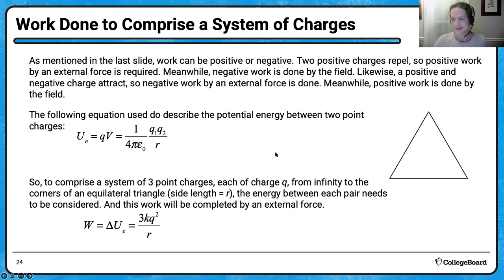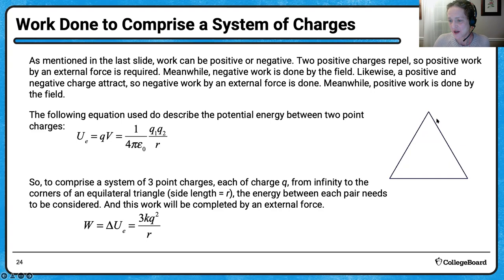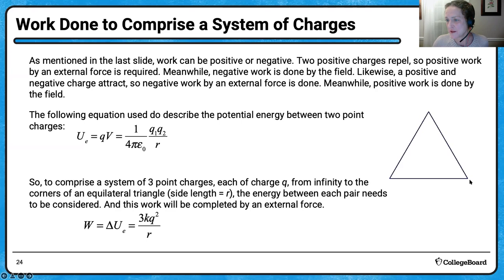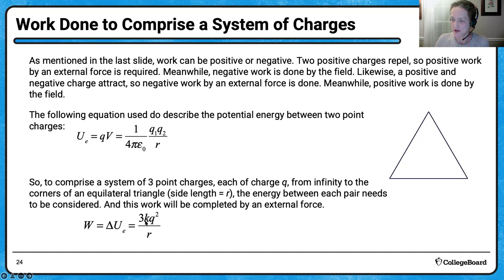Here's a problem: finding the work done to push positive charges together. Positive charges don't want to be near each other — they repel. So if I want to bring positive charges to the corners of an equilateral triangle, I need to be the external force. There's going to be a potential energy between each two-particle pair. The work done by an external force to push these particles together requires me to consider the energy between every pair — and there are three pairs total.